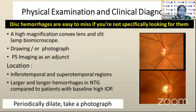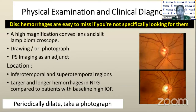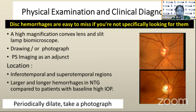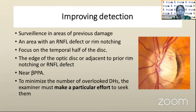Disc hemorrhages are easy to miss if you are not specifically looking for them because they are tiny. High magnification with a convex lens on slit lamp biomicroscopy makes it possible to see them. Fundus photography is also useful — you may not see them with the 90D, but with fundus photographs you can identify them. Always document the position with photographs for further follow-up. Posterior segment imaging can be an adjunct. I suggest periodically dilating the patient and taking photographs to improve detection of disc hemorrhage.